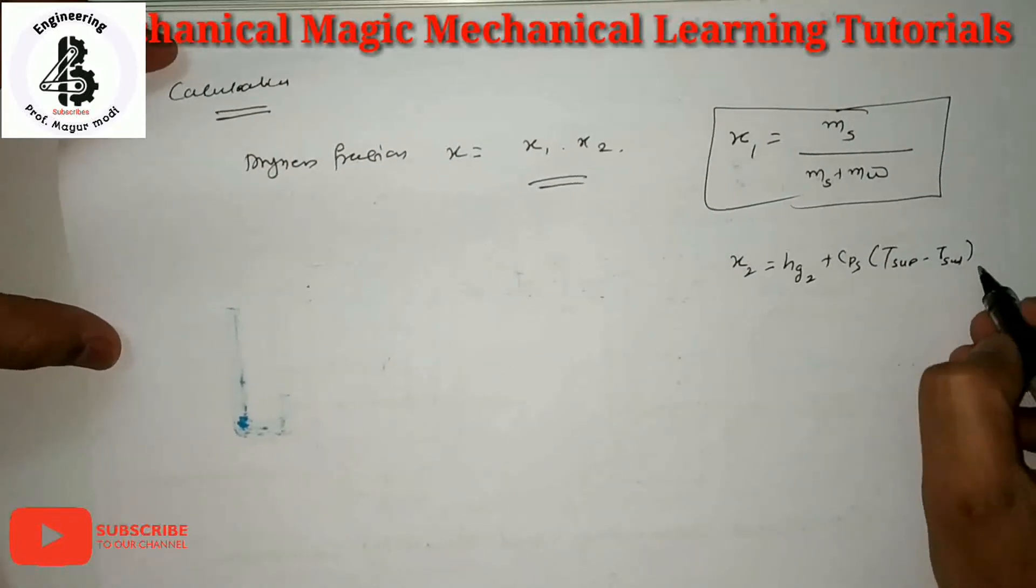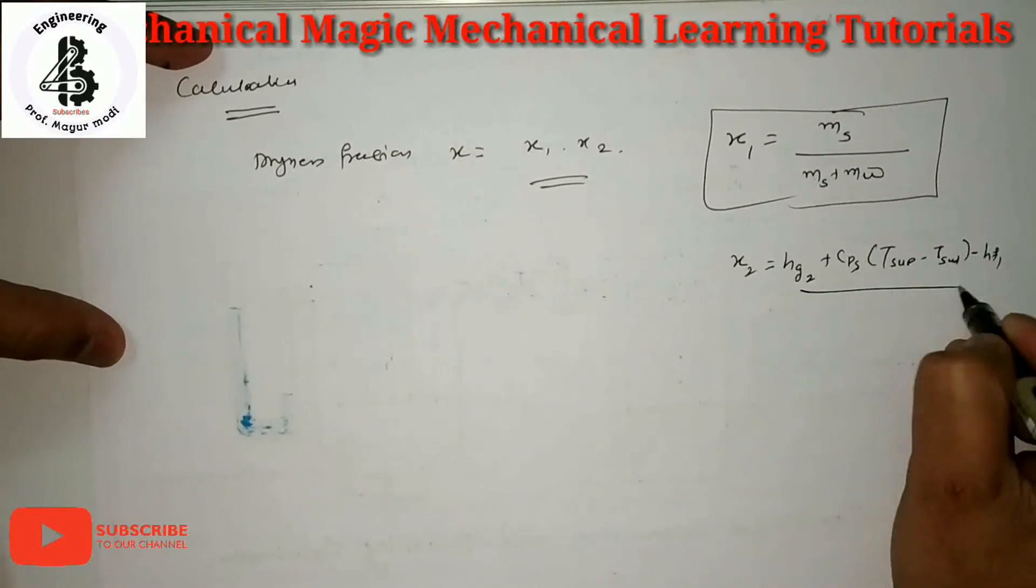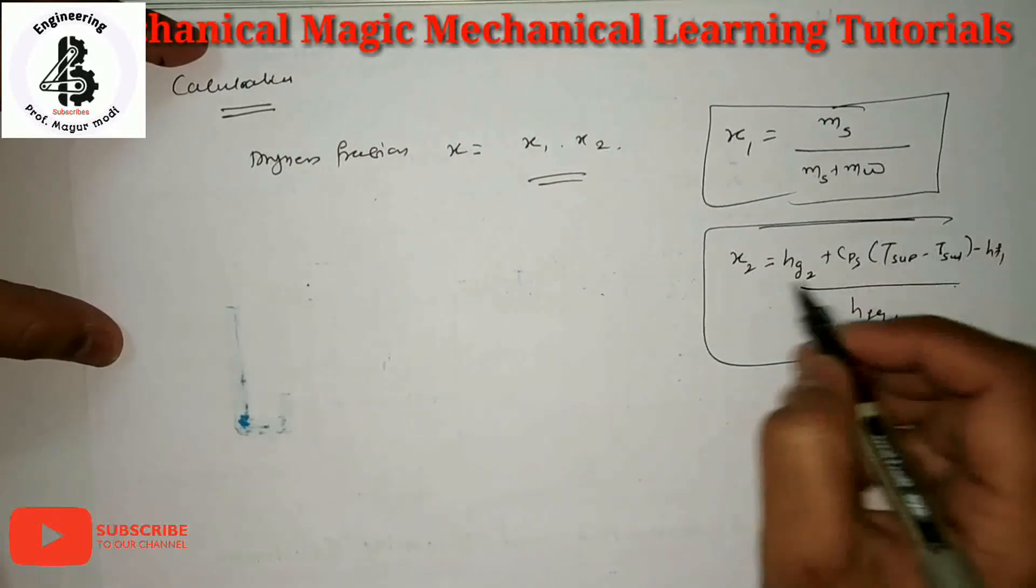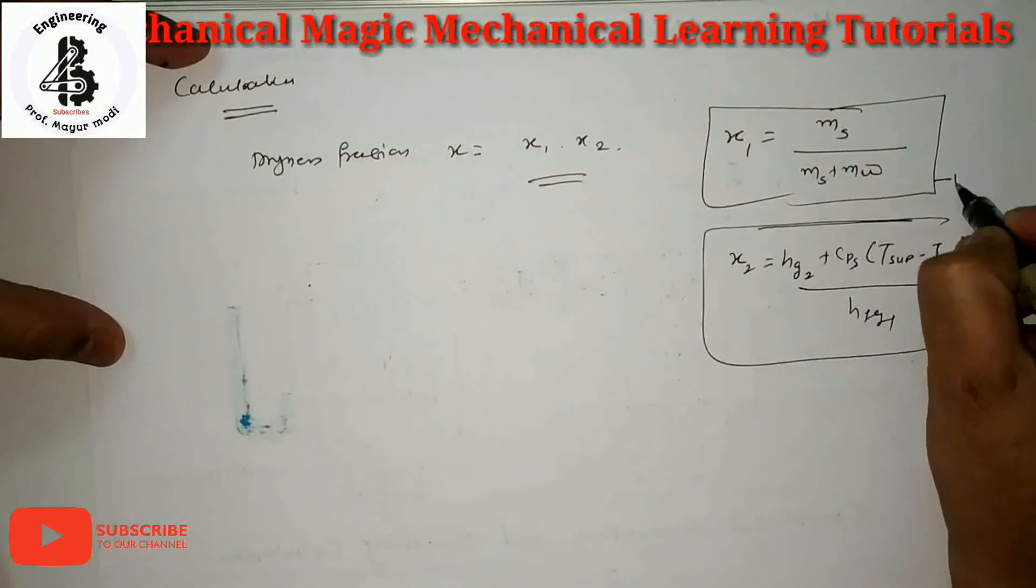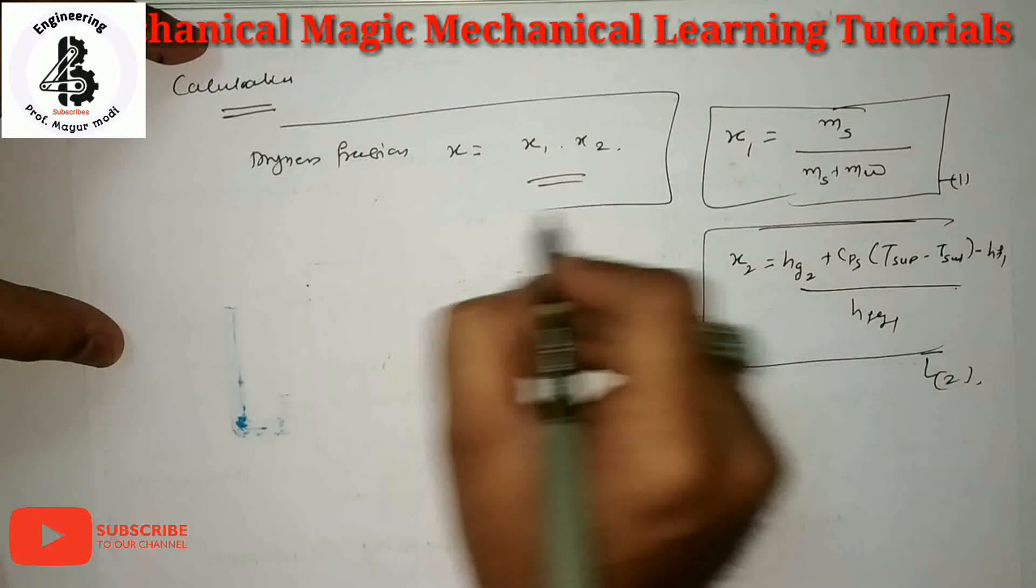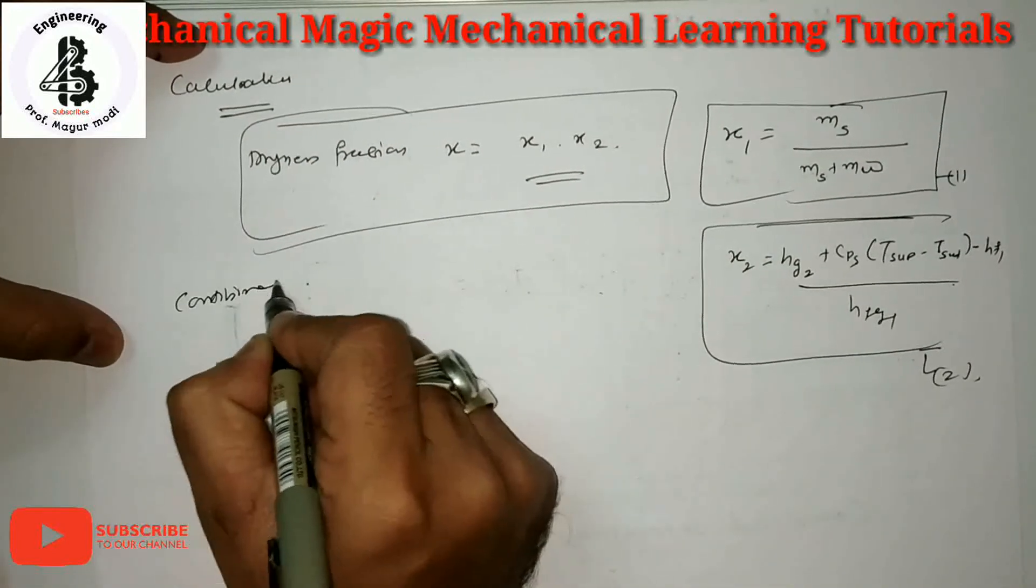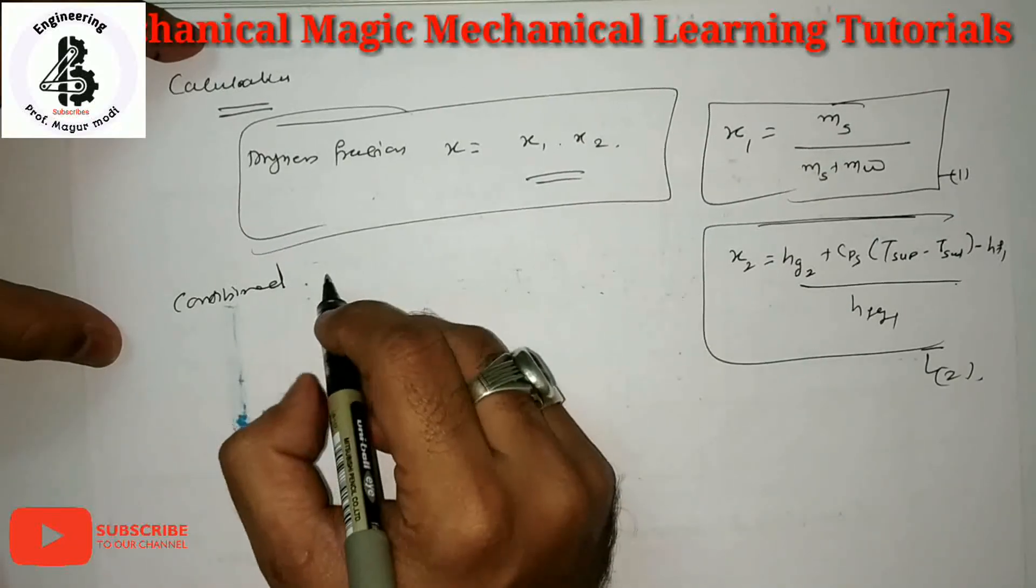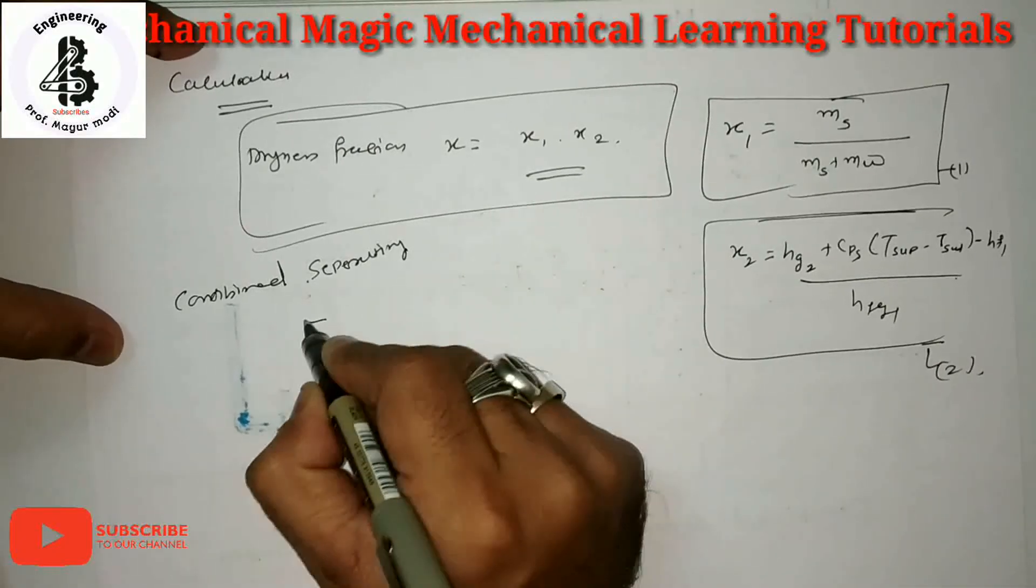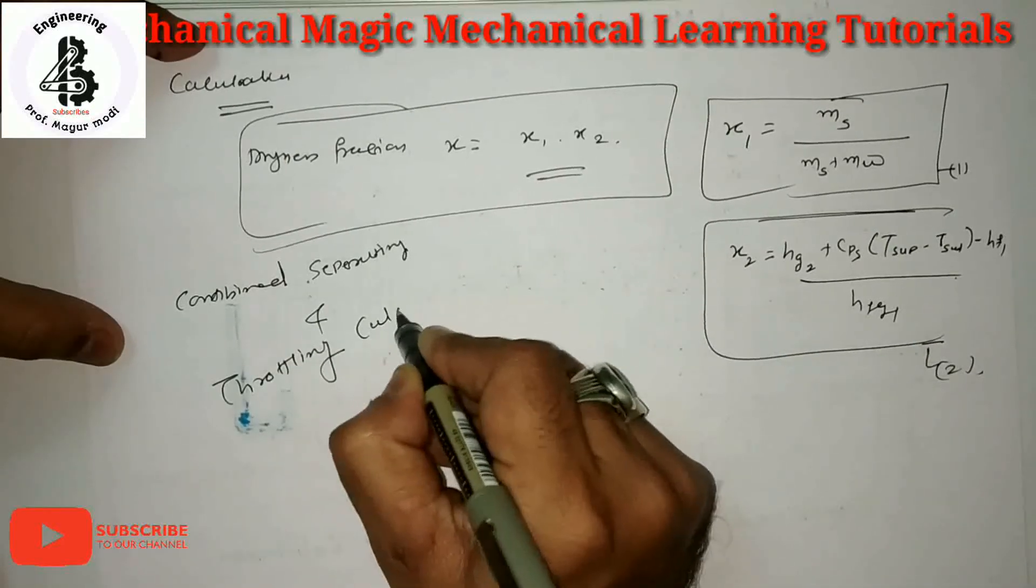By using equation number 1 and equation number 2, you should find dryness fractions for the combined separating and throttling calorimeters.